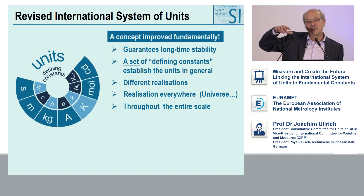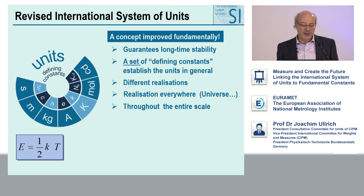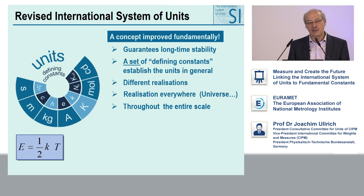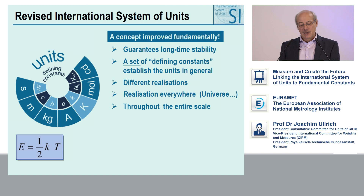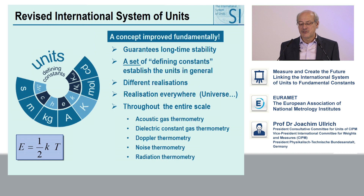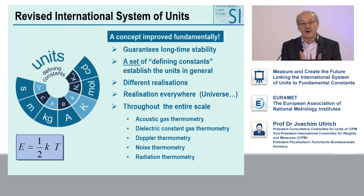There are very different methods: acoustic gas thermometry, dielectric constant gas thermometry, and Doppler noise radiation thermometry. All rely on different equations, but all need the Boltzmann constant. If you fix the numerical value of the Boltzmann constant, you can use all these equations to realize the temperature throughout the entire scale. Here you see a temperature scale from 250 to about 1,000 Kelvin, and the different methods in the new system cover parts of the scale. By using all of them, we can cover the entire scale and get primary realizations at every point — not only at two fixed points.